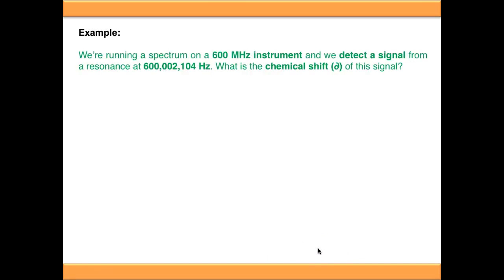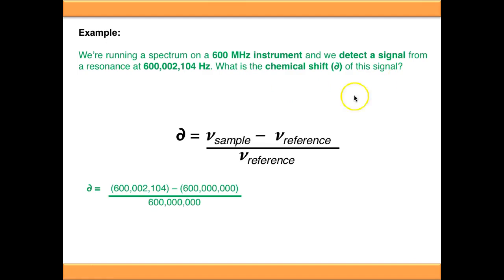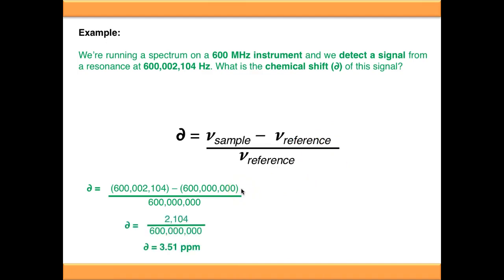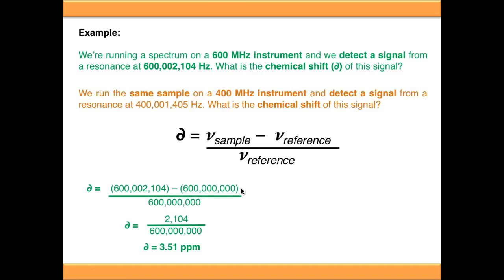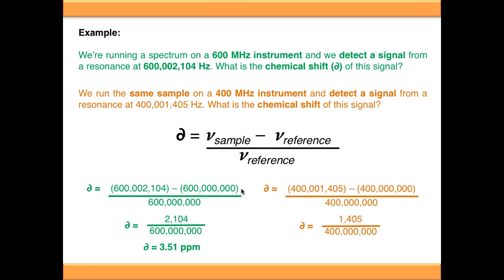As an example, we're running a spectrum on a 600 megahertz instrument. We detect a signal from a resonance at 600,002,104 hertz. We feed it into the equation: 600,002,104 minus the reference frequency of 600 megahertz, and the number we get is 3.51 parts per million. If we run the same sample on a 400 megahertz instrument, we detect a signal at 400,001,405 hertz, feed the same numbers into the equation, and come out with the same answer: 3.51 ppm. So it doesn't matter which instrument we use — the chemical shift values are the same, and therefore we can compare the two spectra.